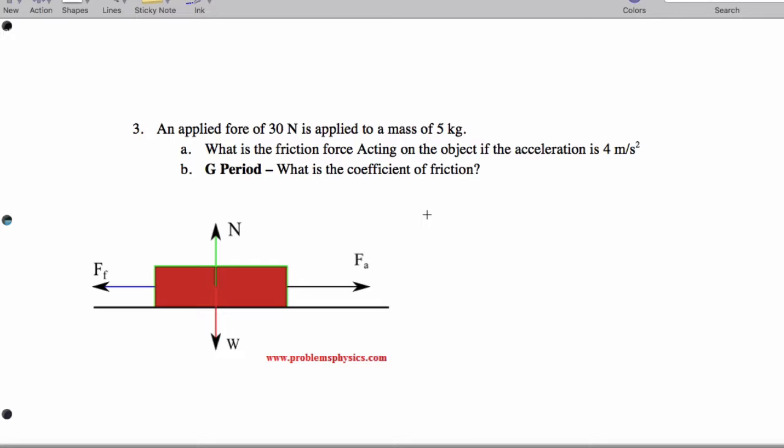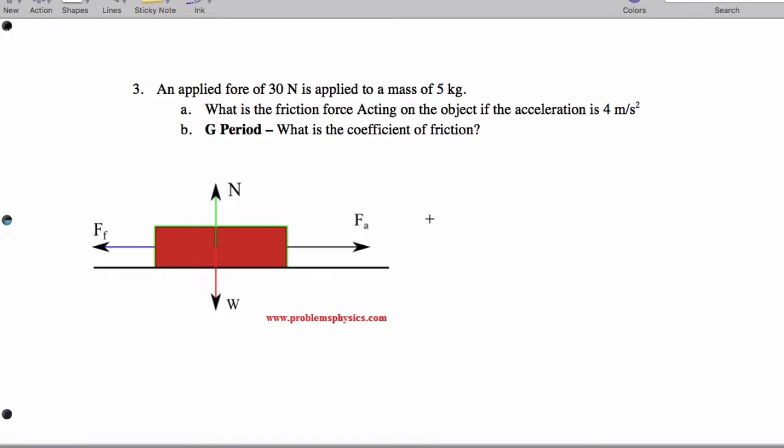So part A. What is the friction force acting on the object if the acceleration is 4 meters per second squared? Well, it's balanced forces in the vertical direction. We have N minus W equals zero.